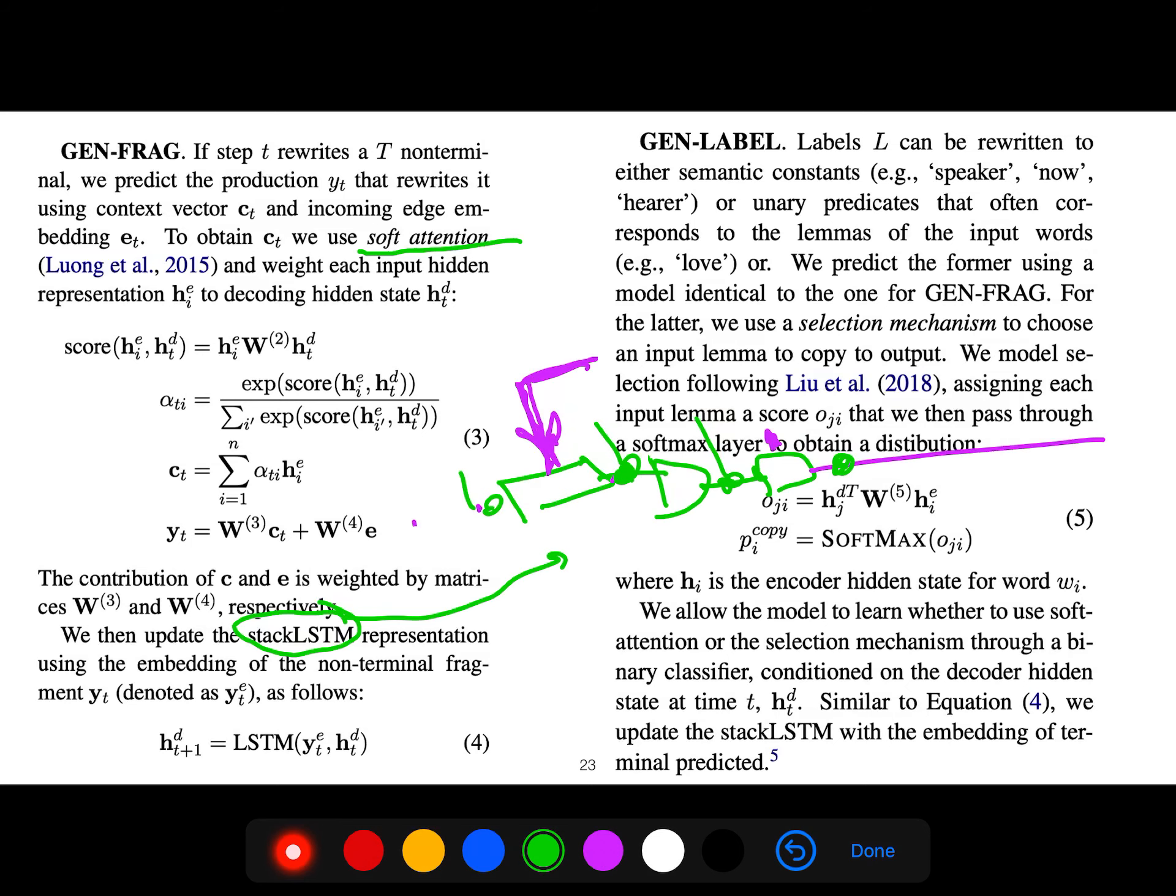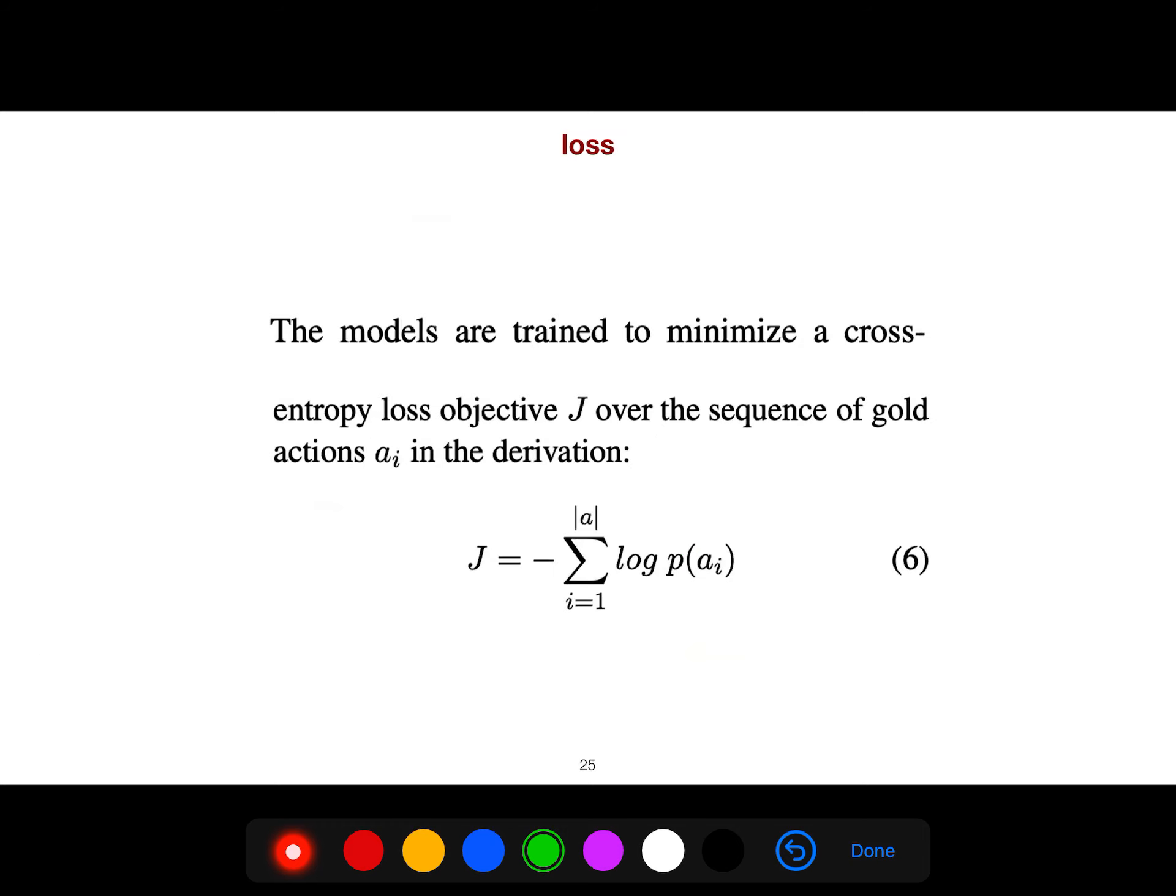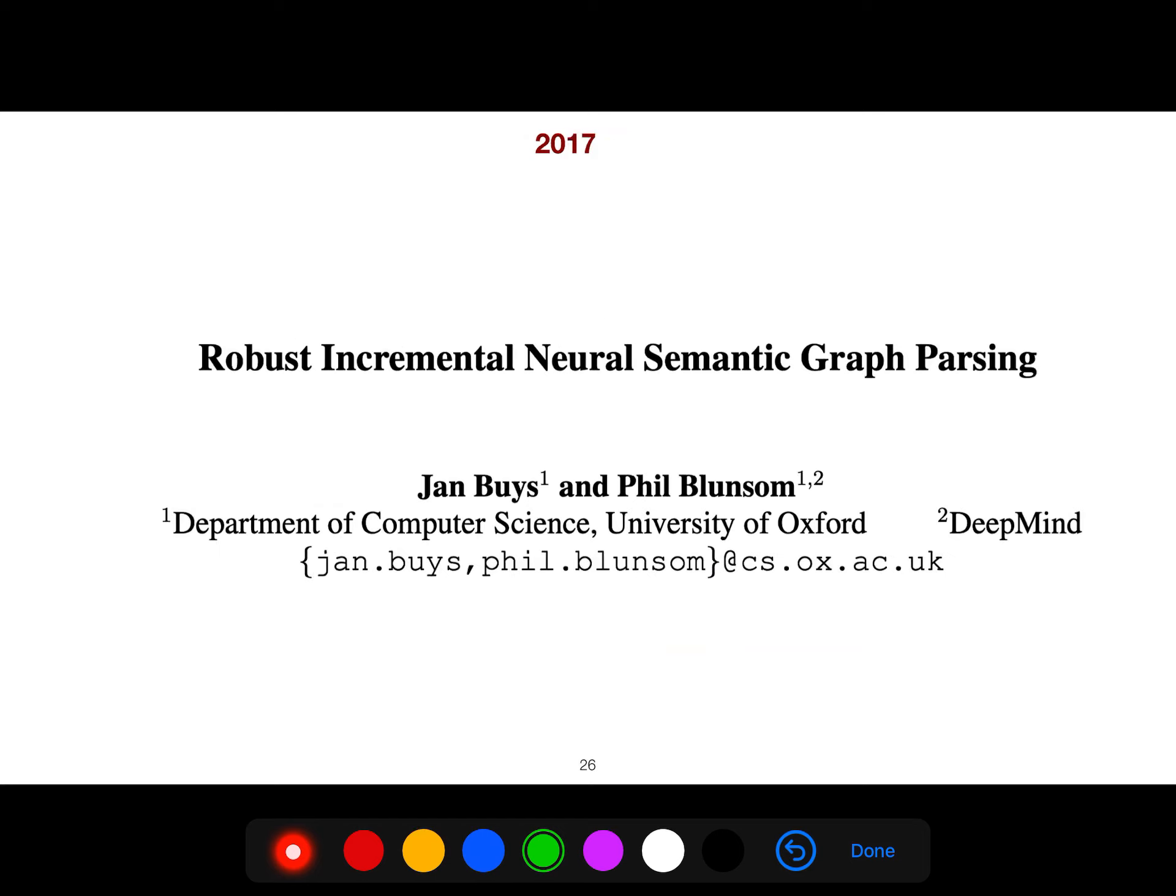Gen label: label L can be written to either semantic constants, for example speaker, now, or hearer, or unary predicates that often correspond to lemmas. We model the selection by assigning each input lemma a score that we then pass through a softmax layer. The reduce is the same, we use LSTM. The loss is just the entropy loss over the sequence of gold actions. This is another good article.